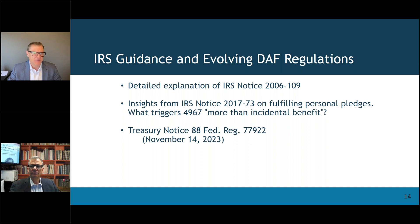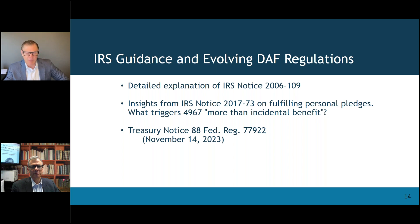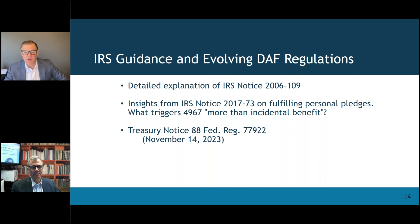A little bit of legislation since 2006, before we get to the proposed regs. Following the 2006 Pension Protection Act, the IRS issued Notice 2006-109, which provided interim guidance on DAFs focusing on the application of excise taxes and outlining what would constitute acceptable distributions. The IRS was trying to crack down a little bit on some abuses that were happening with donor advised funds at the time, and they needed to answer questions about grants to supporting organizations — Types 1, 2, and 3 — and they also took this opportunity to define what doesn't qualify as a DAF. That notice is still really in force right now until the current proposed regs are finalized.